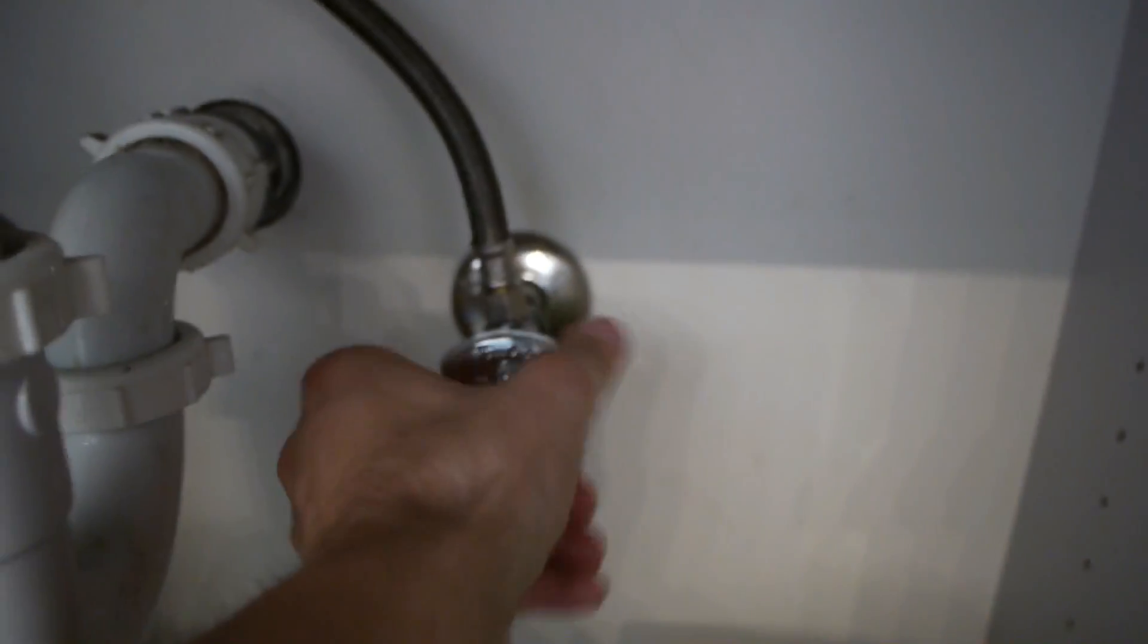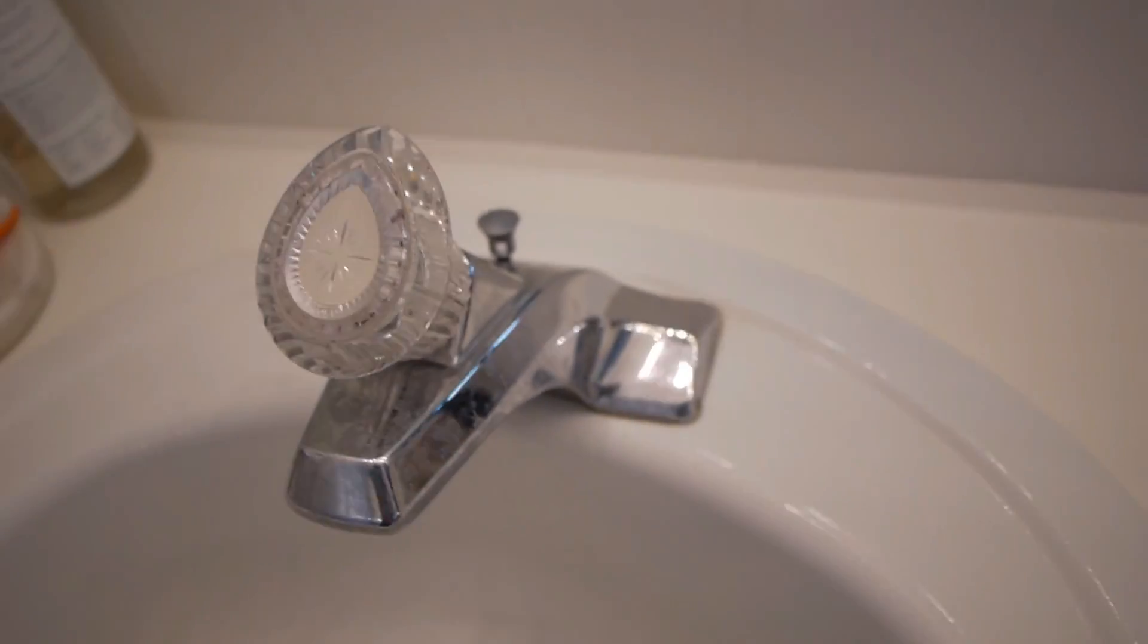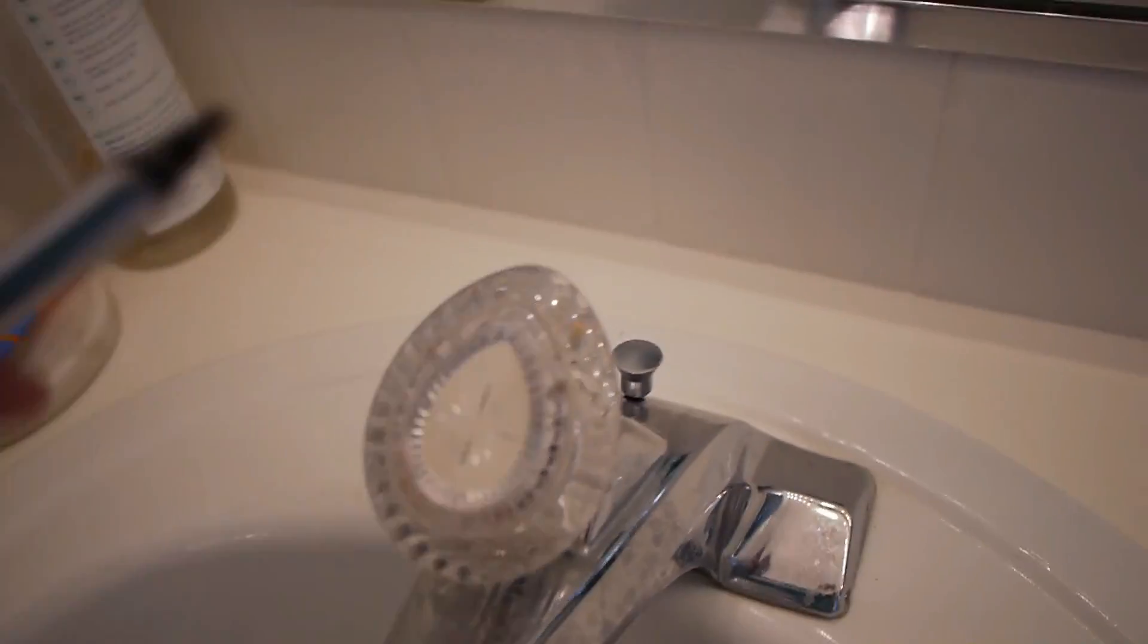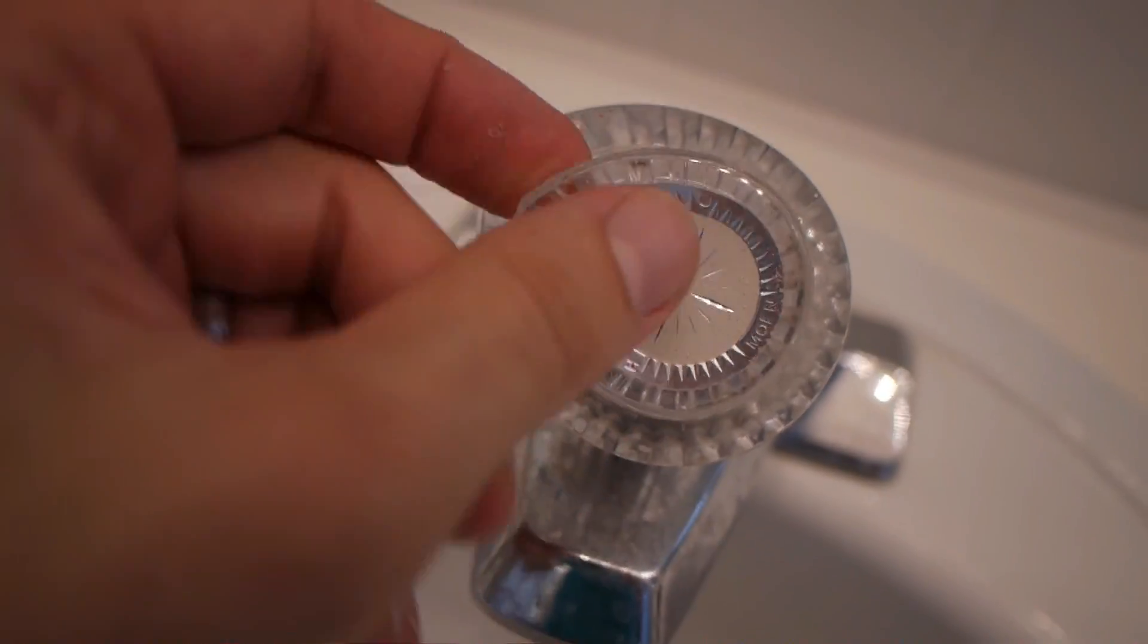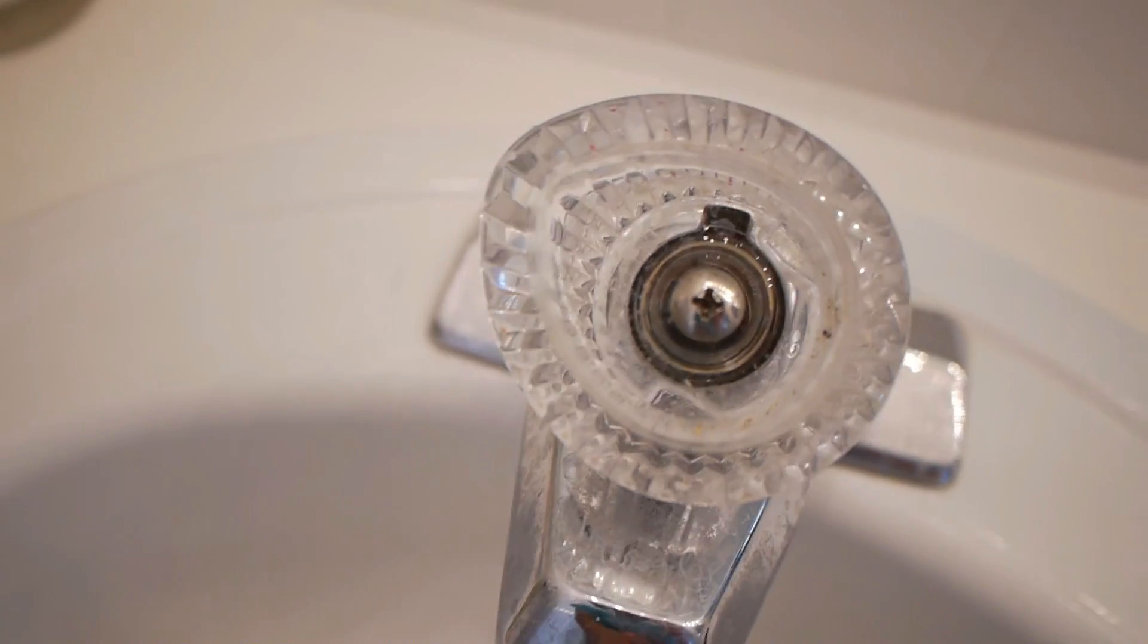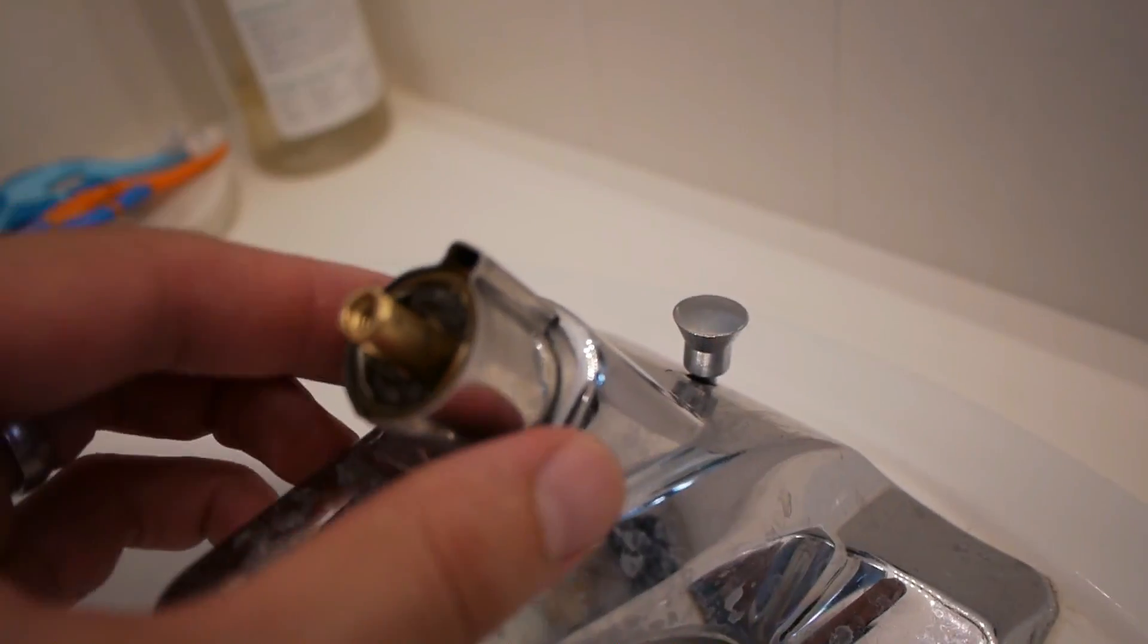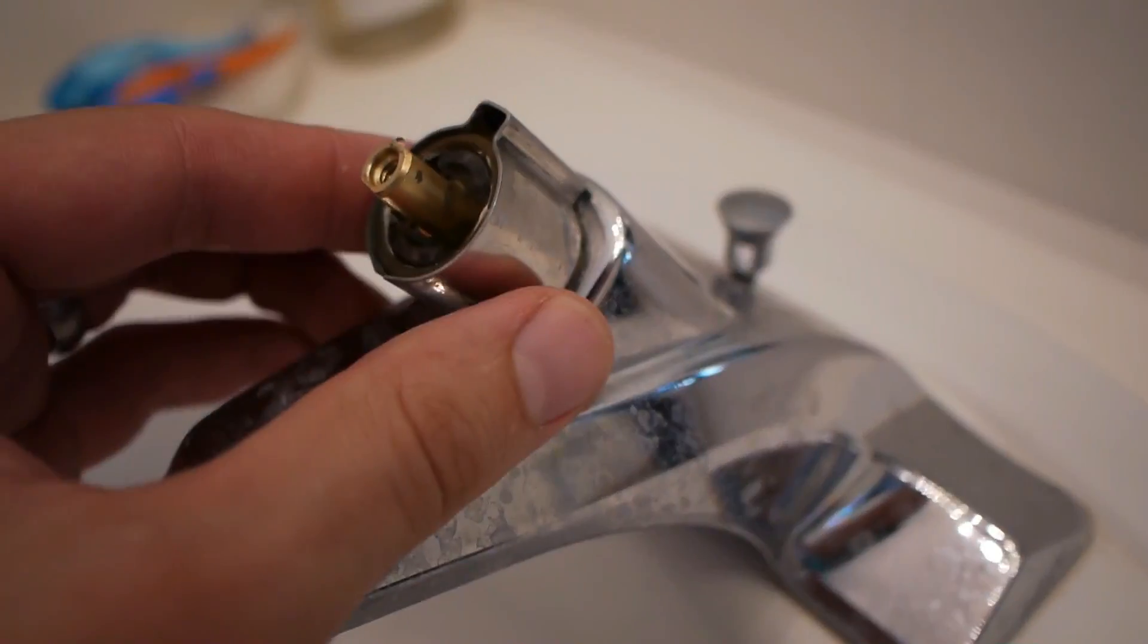We need to pop this cover off, so I'm just gonna try to pry it up with a screwdriver. Once this is pried off, you can see there's the screw holding that on. Then this kind of screws and this whole handle comes off. On ours, there's this retaining clip.